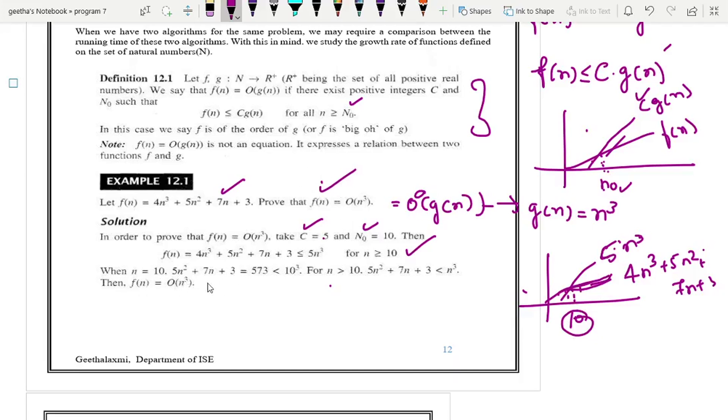You can see here when n is 10, 5n square plus 7n plus 3 will be 573 which is obviously less than 10 cube. For n greater than 10, this particular 5n square plus 7n plus 3 is less than n cube. Hence we can say that f of n equal to order of n cube.